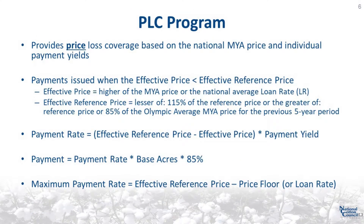The PLC program provides price loss coverage based on the national marketing year average price and individual payment yields. PLC payments are issued when the effective price is less than the effective reference price. The effective price is equal to the higher of the national marketing year average price or the national average loan rate. The effective reference price will only be higher than the statutory reference price following several years of much higher prices. Given current price projections, the effective reference price for seed cotton is expected to equal the statutory reference price. The payment rate is equal to the effective reference price minus the effective price times the payment yield. The PLC payment is equal to the payment rate times base acres times 85%. The maximum payment rate is equal to the effective reference price minus the price floor for seed cotton or the loan rate for other covered commodities.